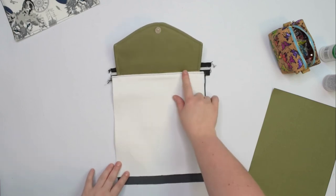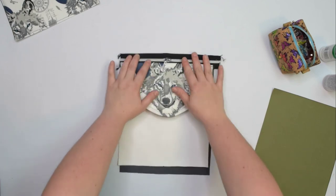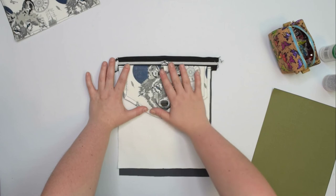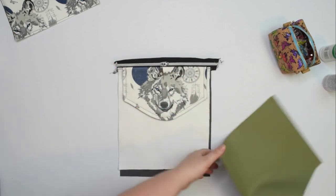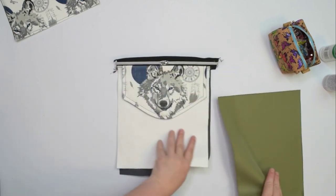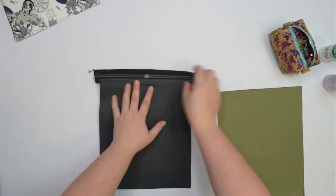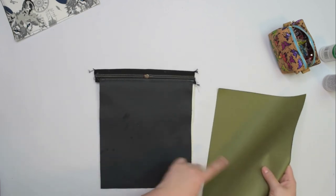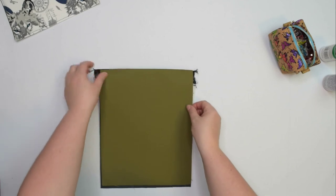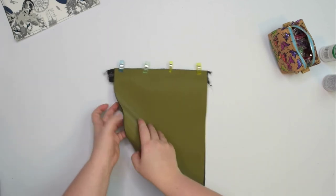Once you have that topstitch, you can bring the flap down and press it flat with an iron. Next, you can take the remaining pocket piece, flip the panel over and line it up at the other side of the zipper with right side facing together. Clip it in place, then if you prefer you can baste it.